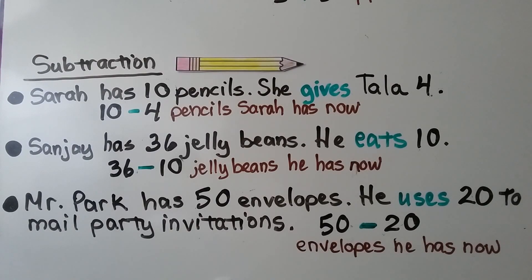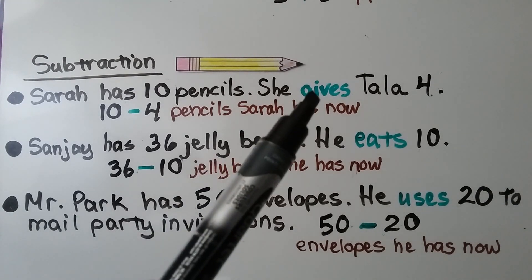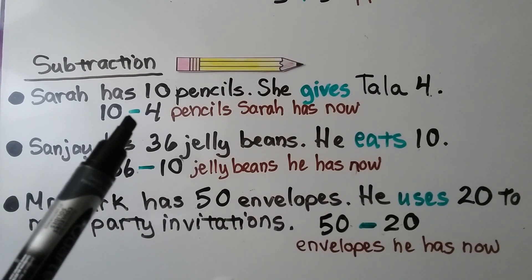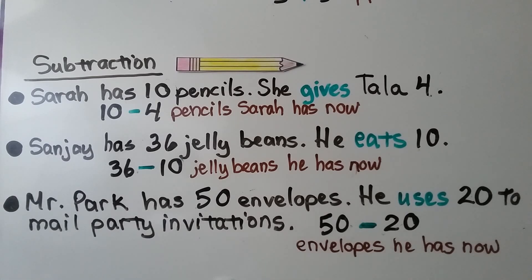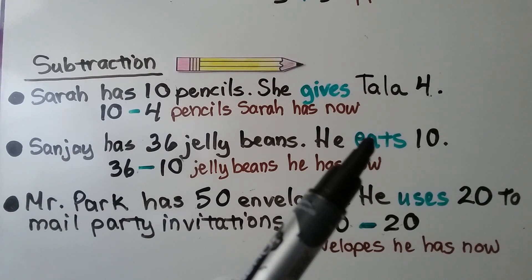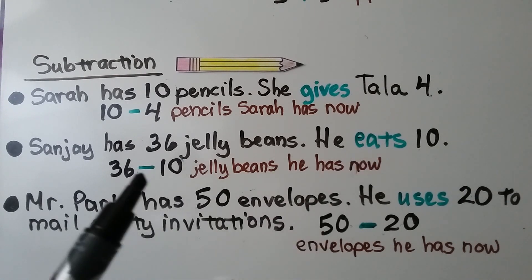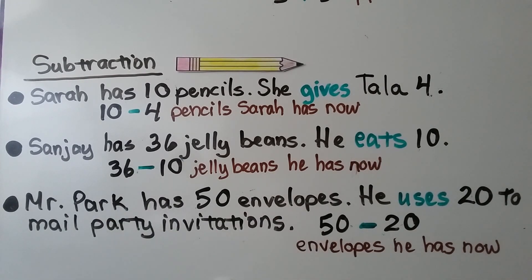For subtraction: Sarah has 10 pencils and she gives Tala 4. 'Gives' tells us to subtract, so we have 10 minus 4 for the pencils Sarah has now. Sanjay has 36 jelly beans and he eats 10. 'Eats' tells us we're taking some away, so that's 36 minus 10 jelly beans he has now.